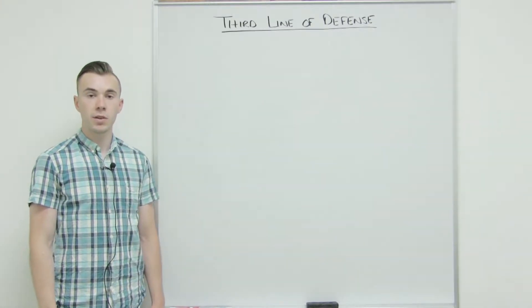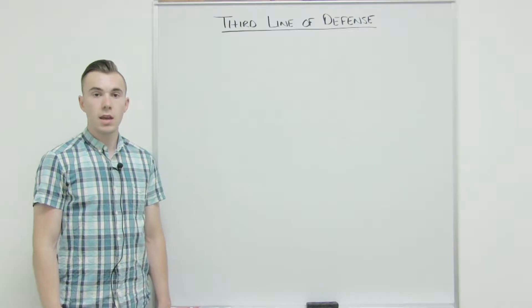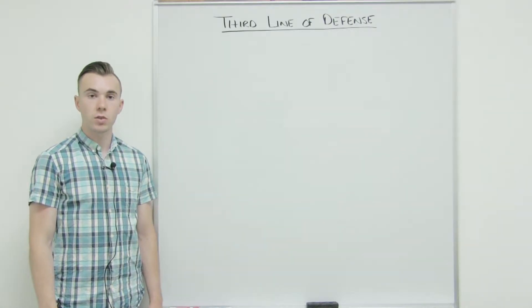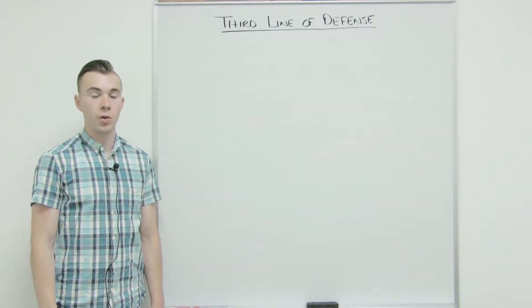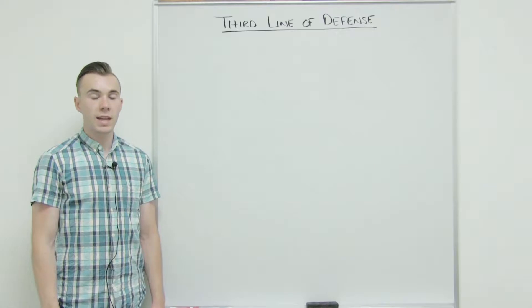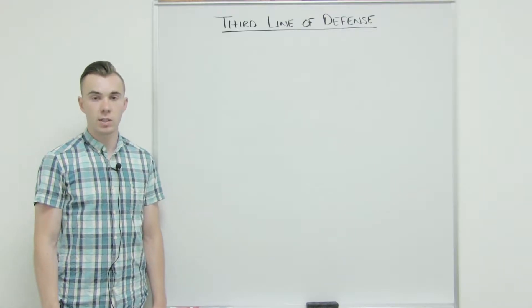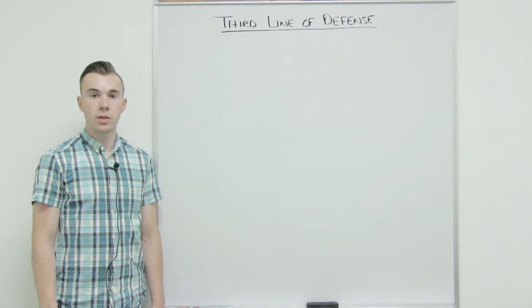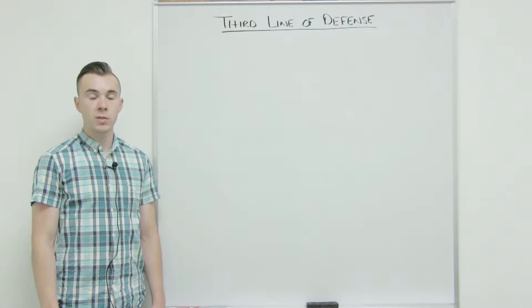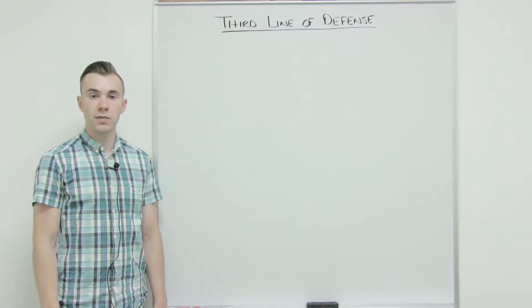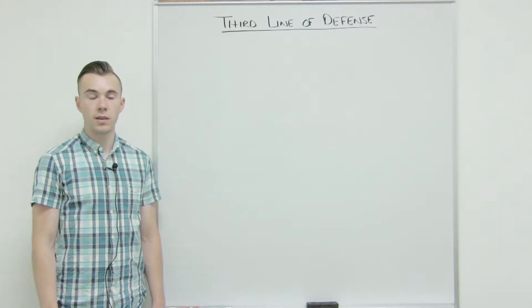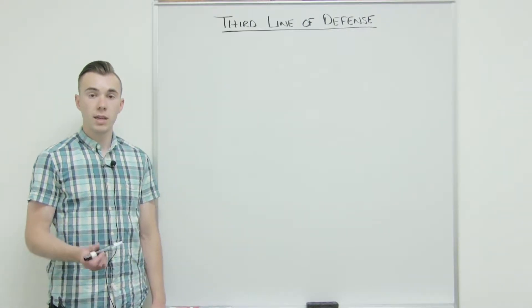More specifically, plasma cells produce these antibodies. In addition, helper T cells are going to play a part in the humoral response in order to activate this response. But in this video, we are going to talk about just the humoral response, and in the next video we'll talk about how it is activated.